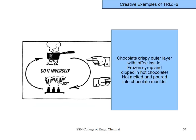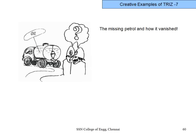Another example: at a birthday party, there was thick liquid syrup coated outside by chocolate. Normally you would heat the syrup and pour it into a chocolate mold, but the heat melts the chocolate. The solution — do the reverse: instead of heating, freeze the liquid in the shape of a bottle, then dip it in chocolate on the outer edge.